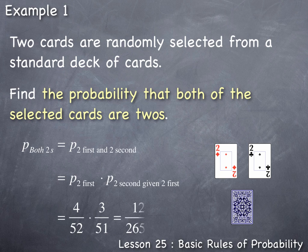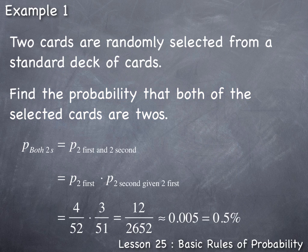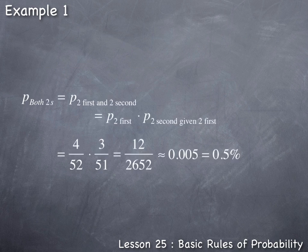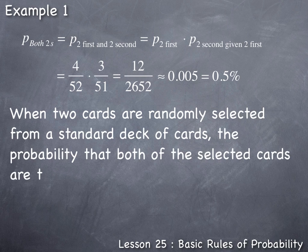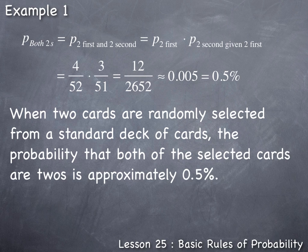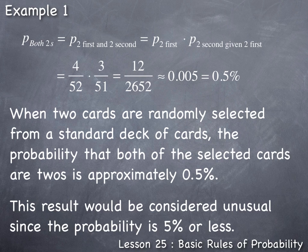Multiplying the fractions across numerator and denominator: 4 × 3 = 12, and 52 × 51 = 2652, giving a probability of 12/2652. Dividing and rounding to three decimal places gives 0.005, or 0.5%. Thus, when two cards are randomly selected from a standard deck, the probability that both are twos is approximately 0.5%, which is considered unusual since the probability is 5% or less.